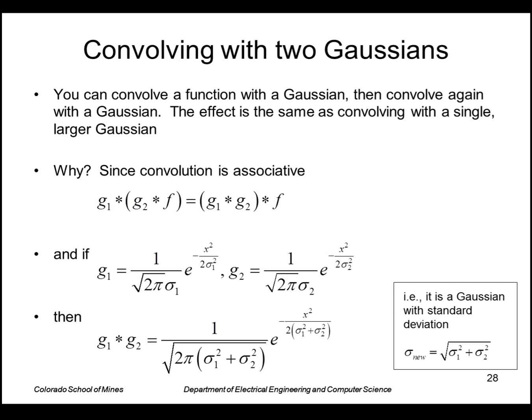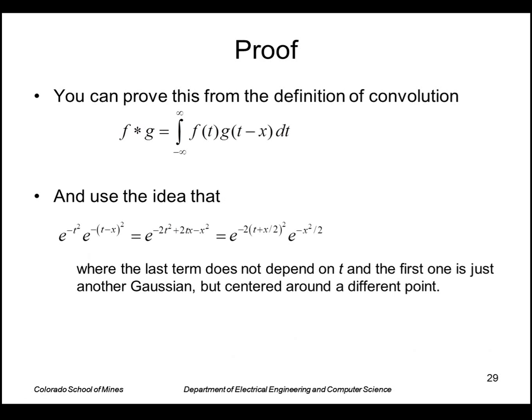Some interesting facts about Gaussians: you can convolve with a Gaussian and then convolve again, and the effect is the same as convolving with a single large Gaussian. So this is a way to implement large Gaussian convolutions. The effective sigma for the large Gaussian is the square root of the sum of the squares of the smaller sigmas. And this is the proof of that.